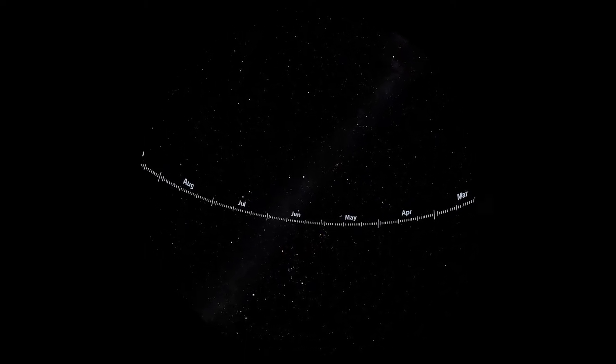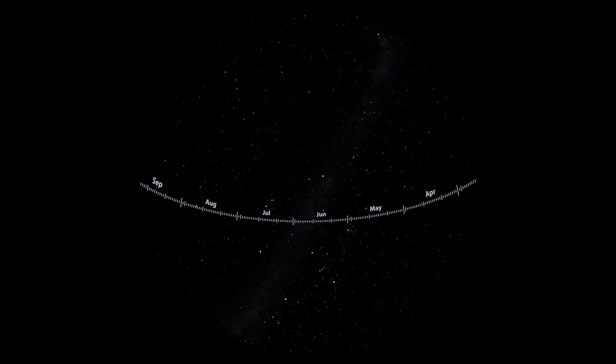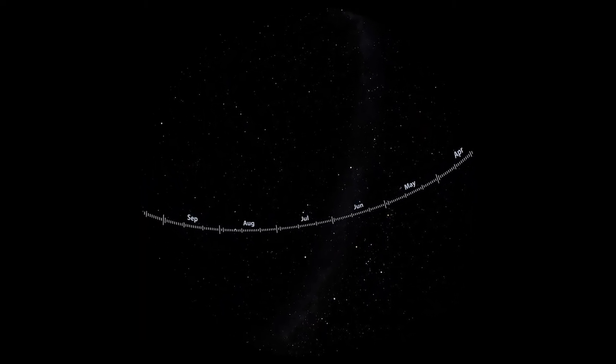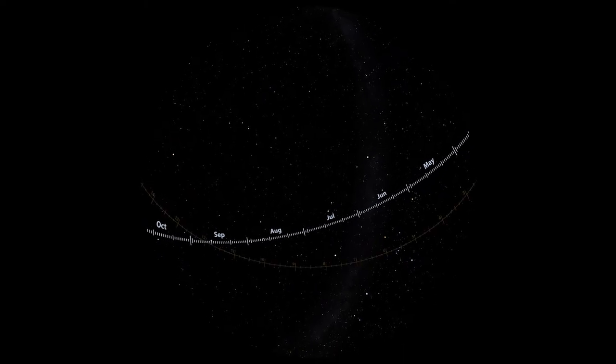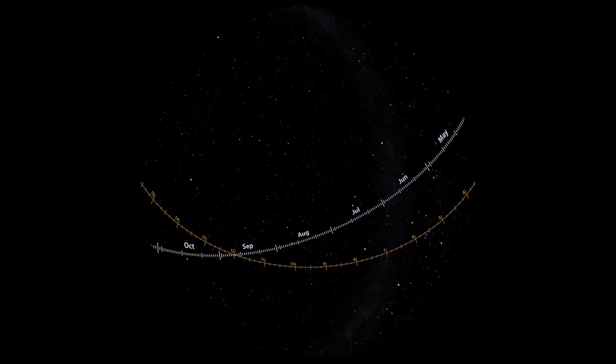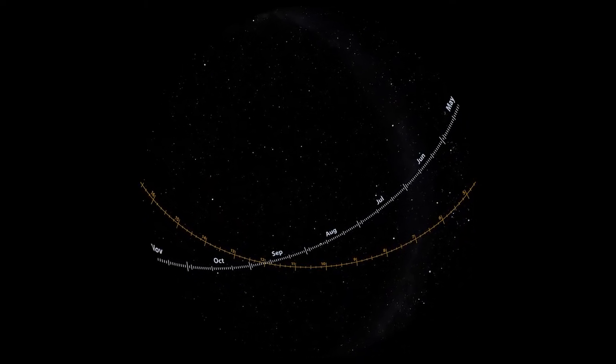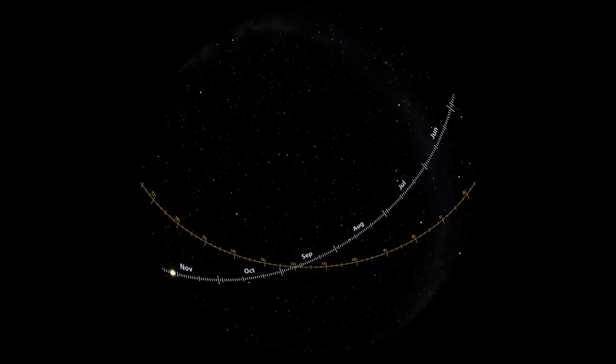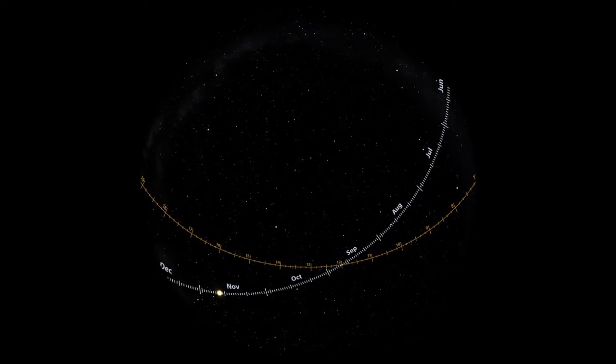But that's not the only line we can draw in the sky. We can project Earth's equator up into the sky like this. This is the celestial equator. Anything on this line will appear directly overhead for a person on the equator at some point during the day, as Earth rotates.